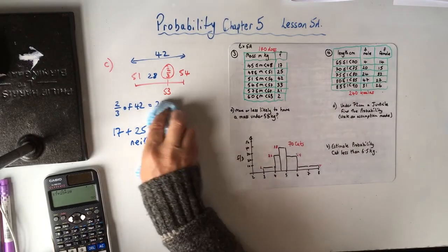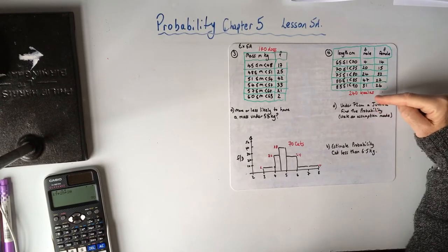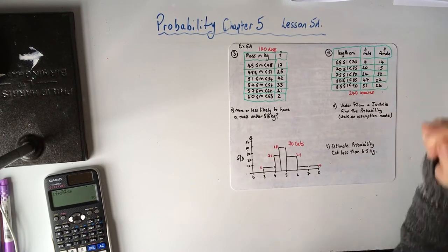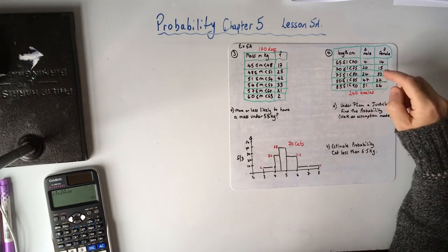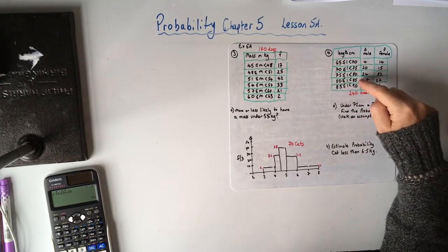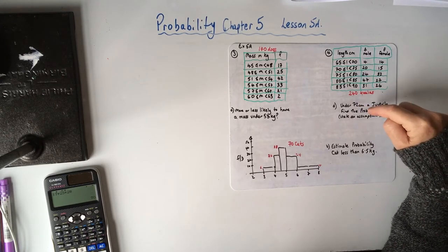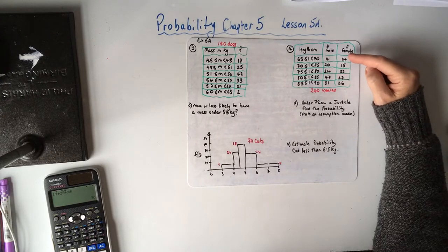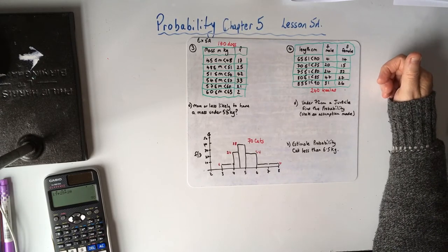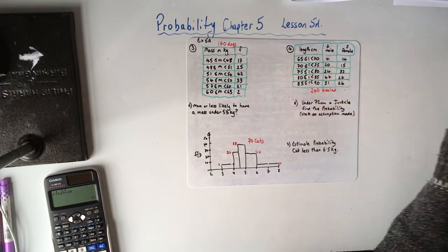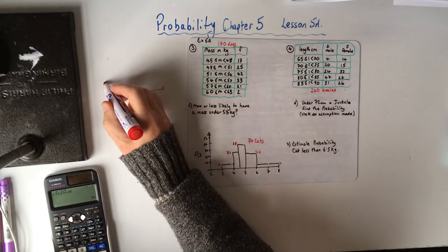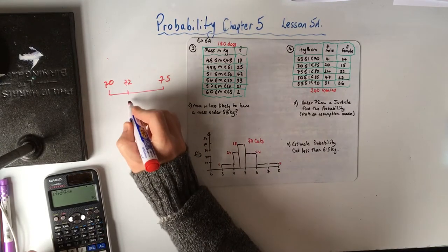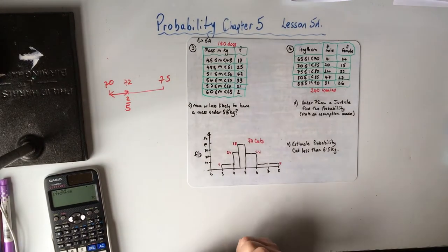Moving on to question four, koalas. It tells you in the table there's 240 koalas, and some of them are male and some of them are female. This is the interpolation bit. It says under 72 centimeters is a juvenile, is a young koala, so if it's under 72 they class it as a juvenile. Find the probability of getting a juvenile. So again, you look at the group, and you've got 70 to 75, so it's a gap of five, and 72, that is two-fifths into that group.